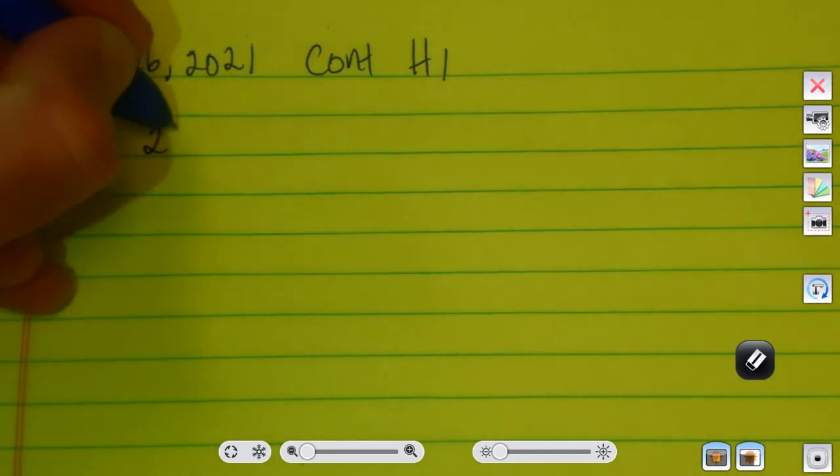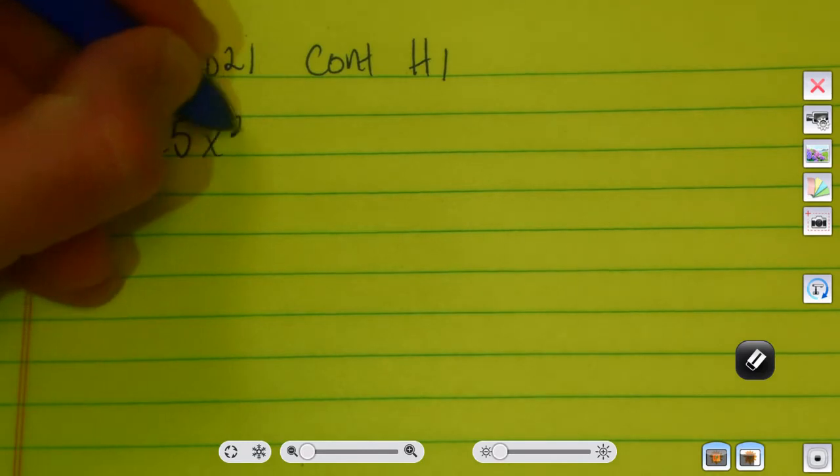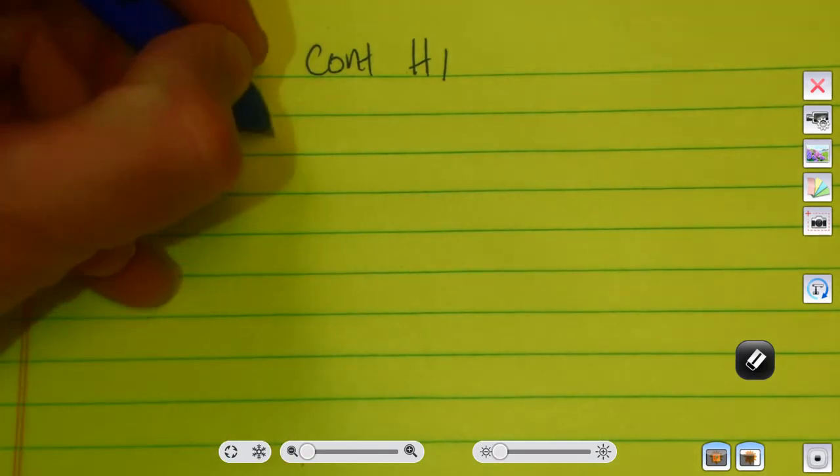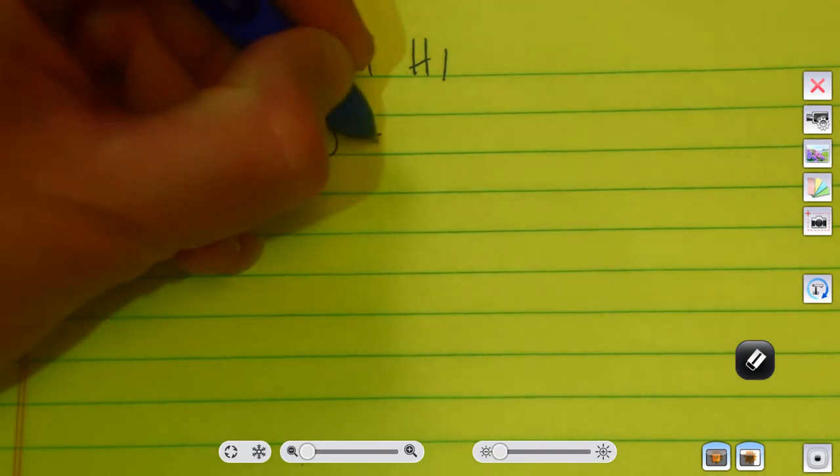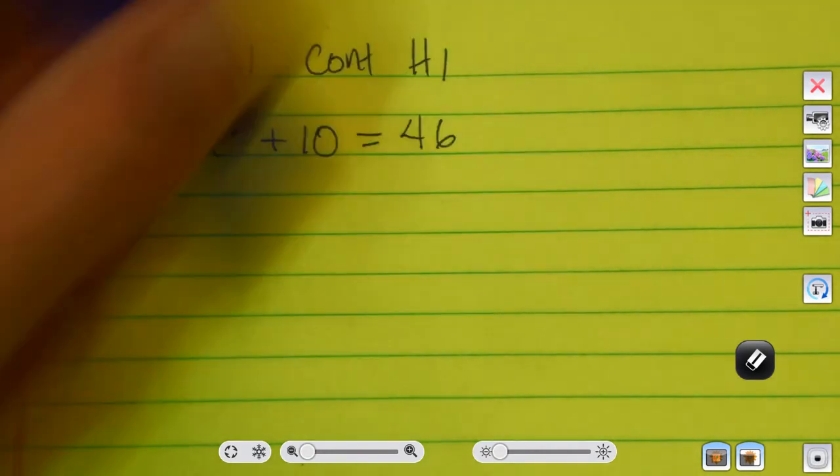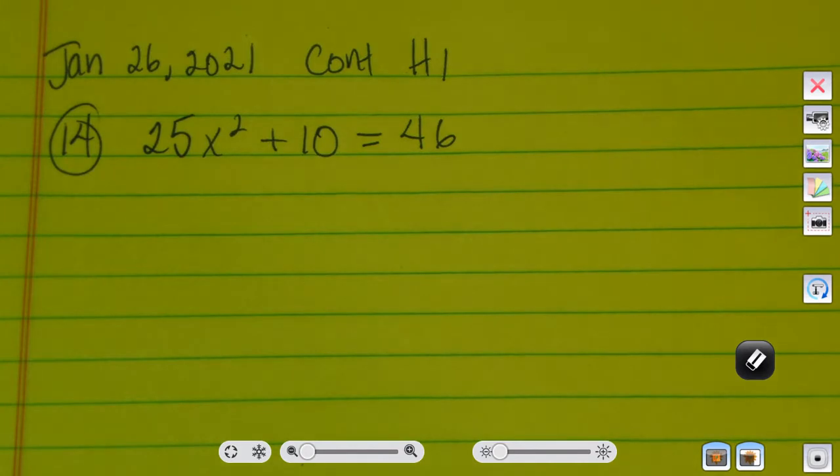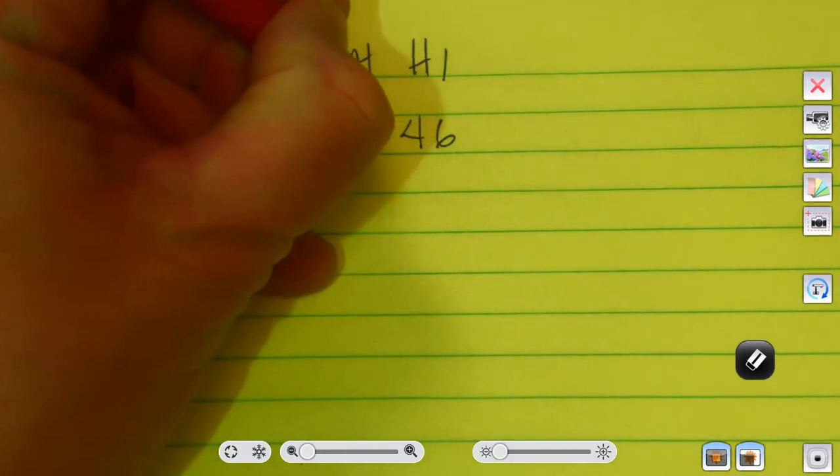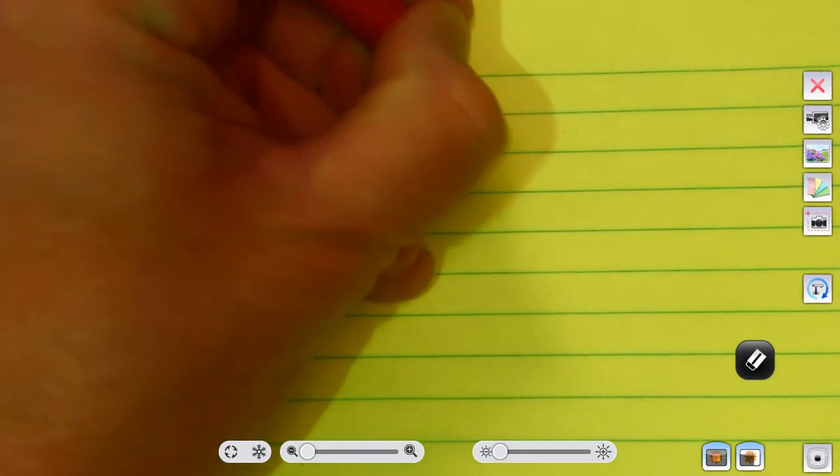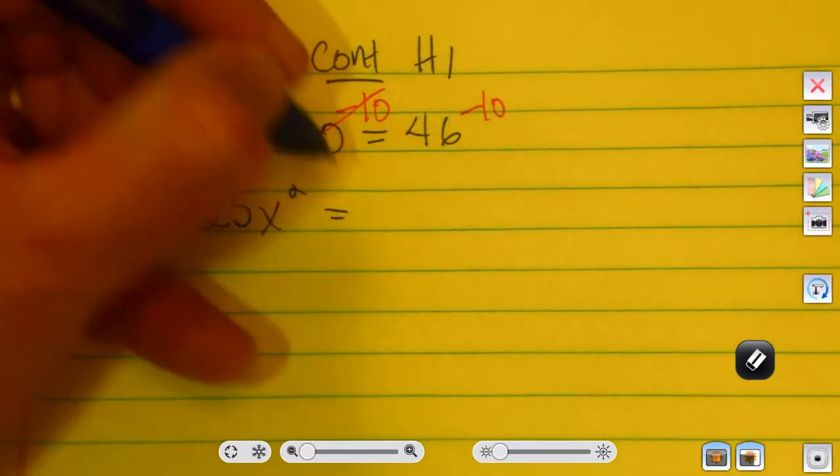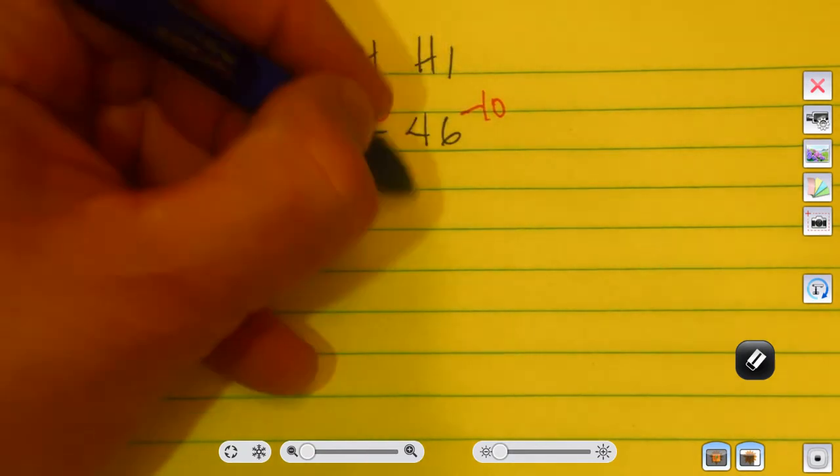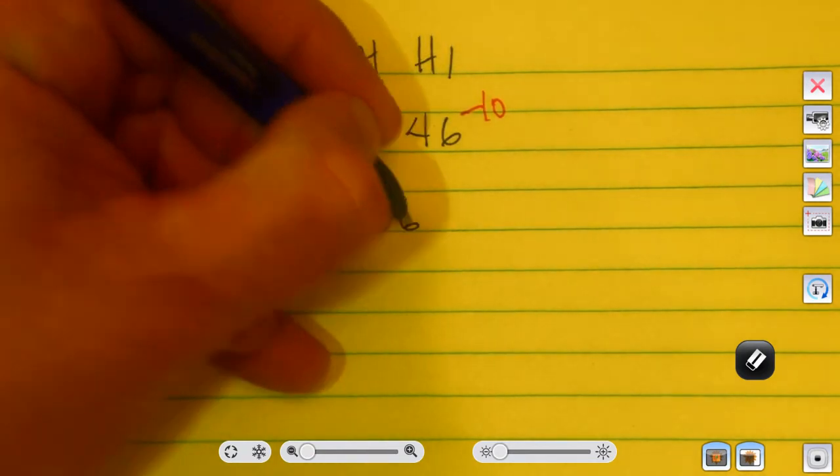Number 14 is 25x squared plus 10, and that equals 46. Let's talk about our approach to working this problem. First thing we're going to do is subtract 10 from both sides. We'll get 25x squared equals 46 minus 10, which is 36.